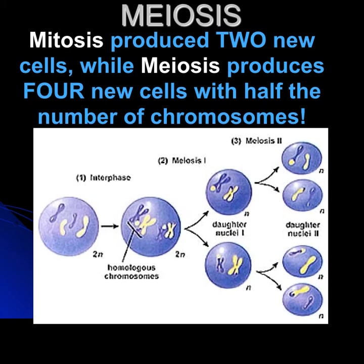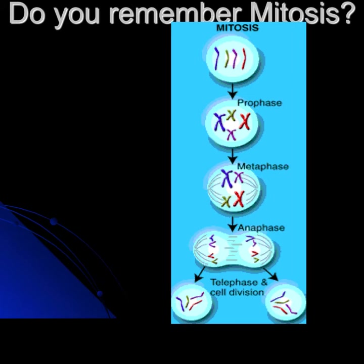Again, four to two. In mitosis, we started with four chromosomes, copied them, they were separated, the two cells then separated, and we end up with two cells that have four chromosomes in them — identical to the original cell.